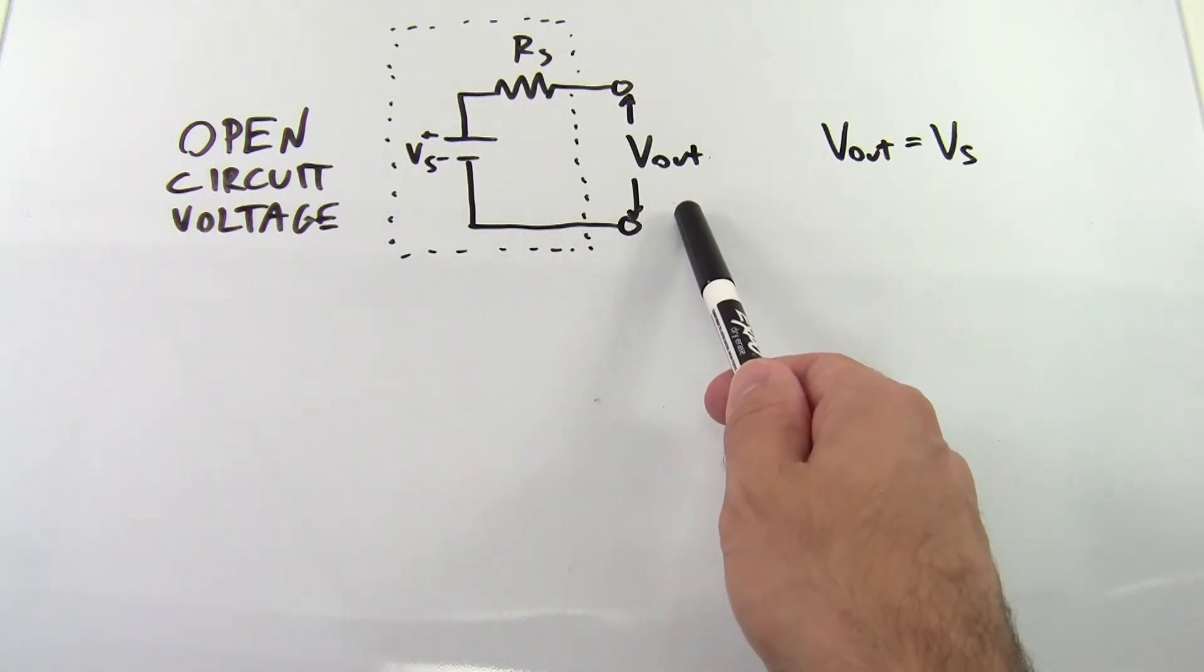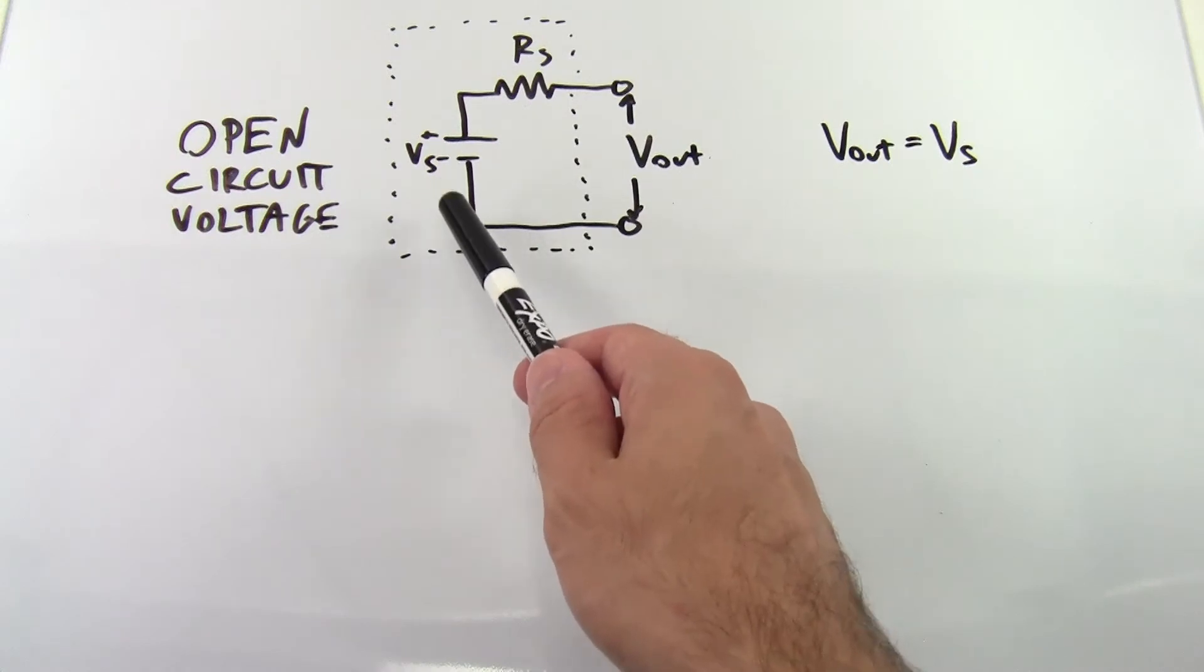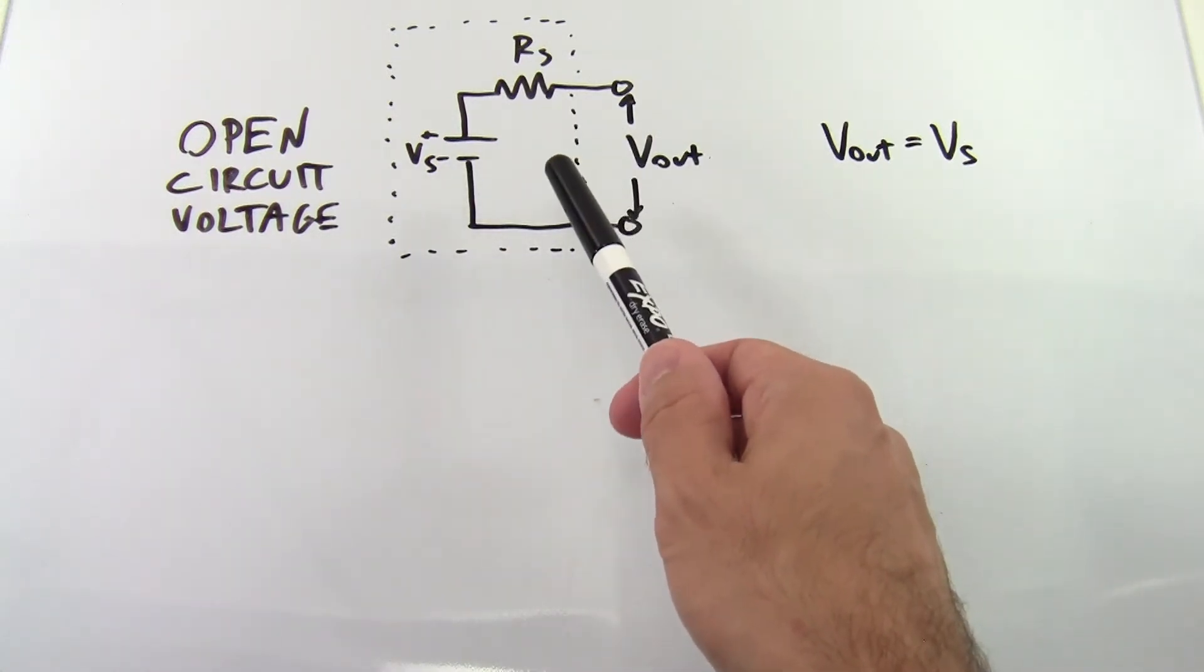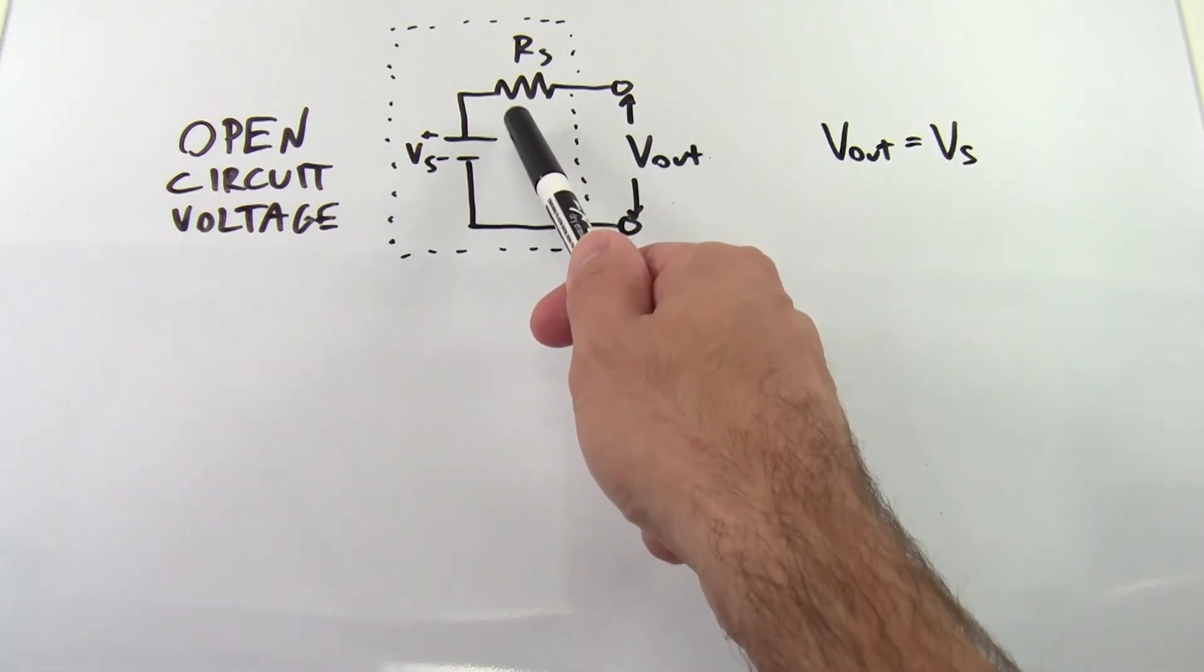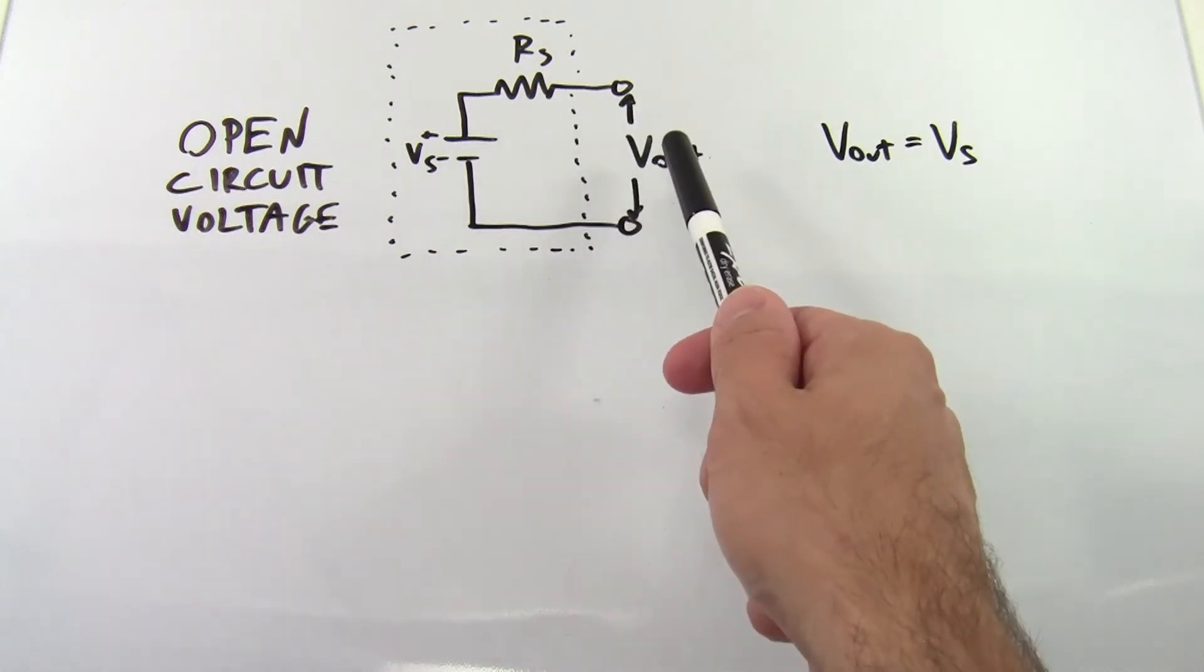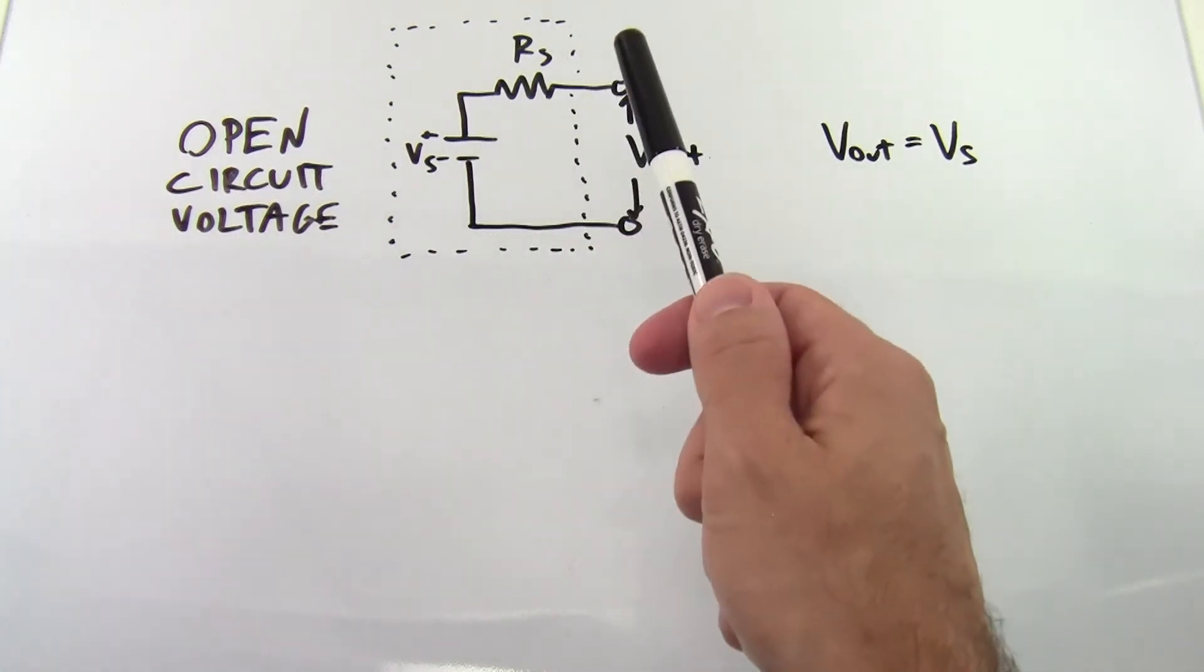This happens because no current can flow in an open circuit, so there is no current flowing through this resistor, the voltage drop across this resistor is zero, therefore your output voltage is equal to the source voltage.